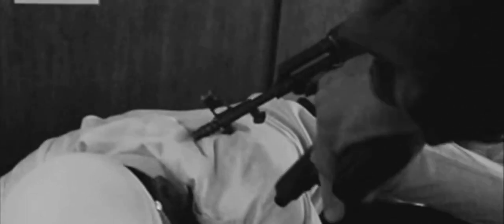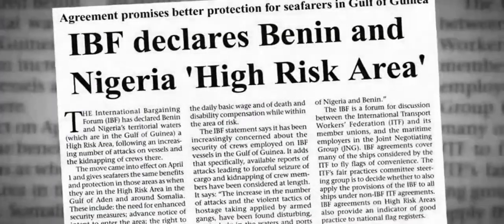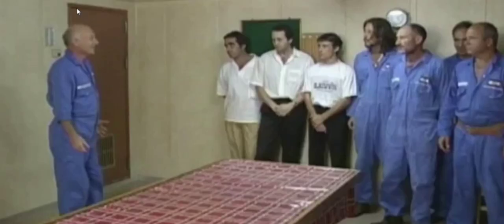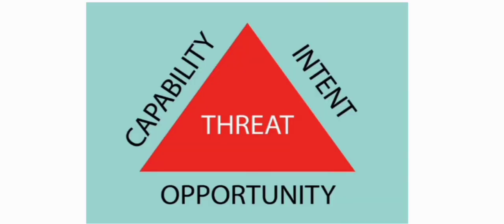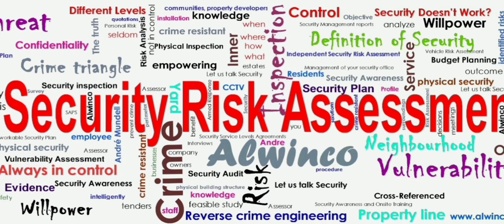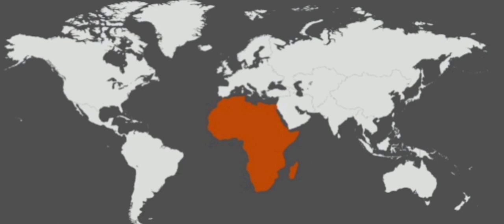A threat is formed of capability, intent, and opportunity. Capability means attackers have the physical means to conduct an attack. Intent is demonstrated by continued attacks or by good intelligence. Opportunity is what is mitigated by the company and ship through application of the measures described in this guidance. If one side of the triangle is removed, then risk is minimized. The company and master cannot influence either capability or intent; therefore, best management practice measures focus on minimizing the opportunity.